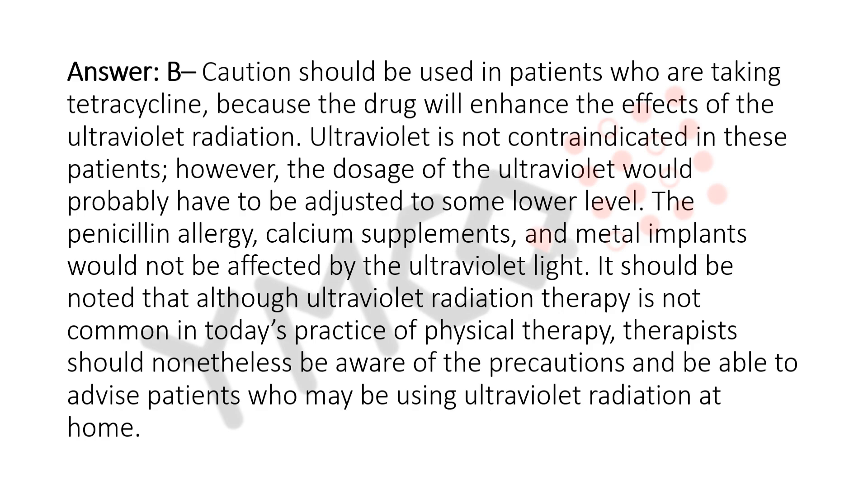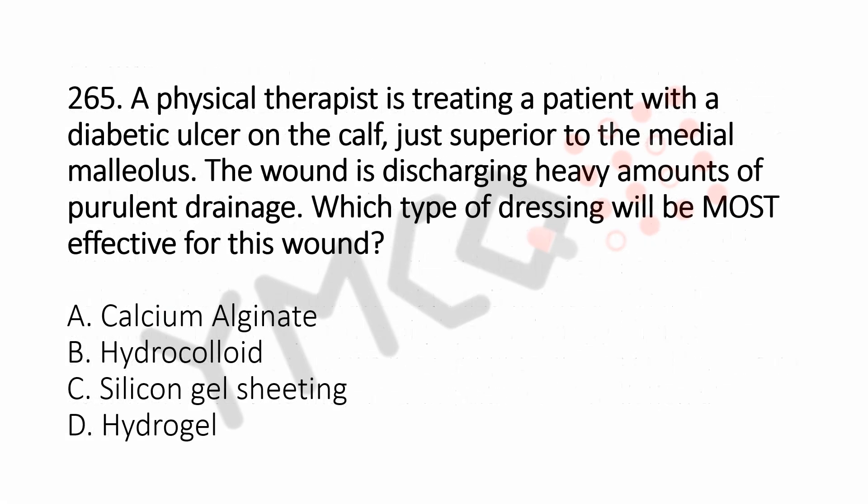Now let's move to Question No. 265. A physical therapist is treating a patient with a diabetic ulcer on the calf, just superior to the medial malleolus. The wound is discharging a heavy amount of purulent drainage. Which type of dressing will be most effective for this wound? Option A – Calcium alginate; Option B – Hydrocolloid; Option C – Silicone gel sheeting; Option D – Hydrogel. And the answer is Option A – Calcium alginate.